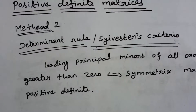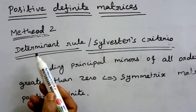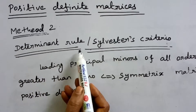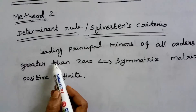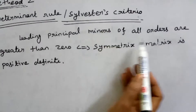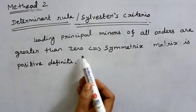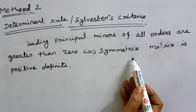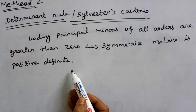Now, the second method: the Determinant Rule, or Sylvester's Criteria. A symmetric matrix is positive definite if and only if the leading principal minors of all orders are greater than 0.